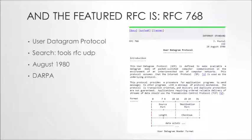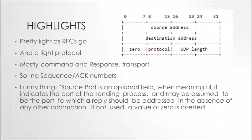From our friends at the DARPA initiative. The UDP RFC is actually pretty small, at least the original one. It has a really simplified header when you compare it to TCP — really just the source and destination port addresses, somewhere in the neighborhood of 65,536 possibilities. It's generally speaking a command-and-response transport protocol, so you do something and then get an answer. No sequence numbers, no acknowledgement numbers.